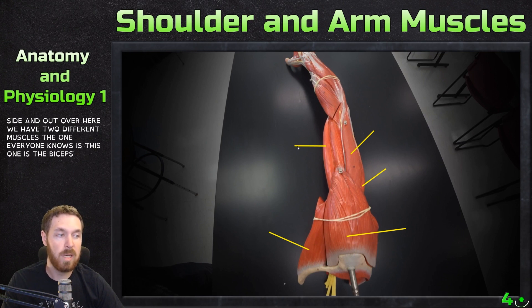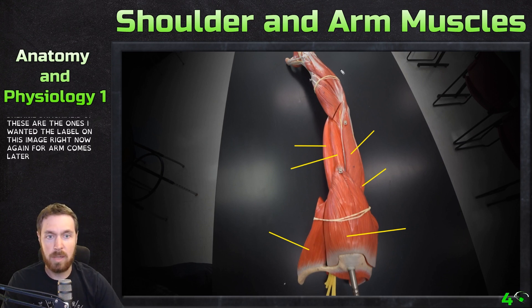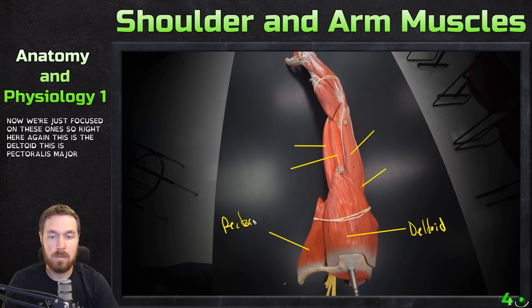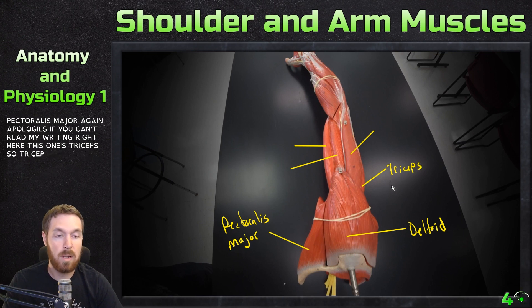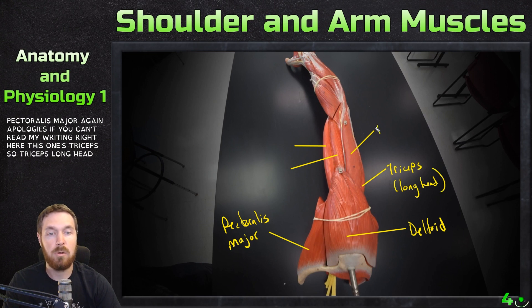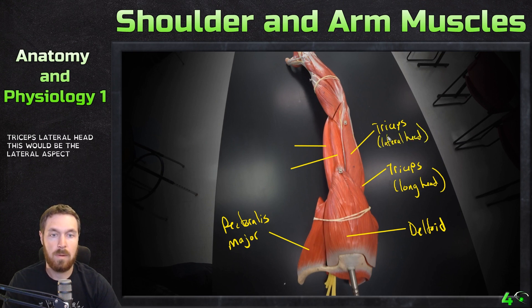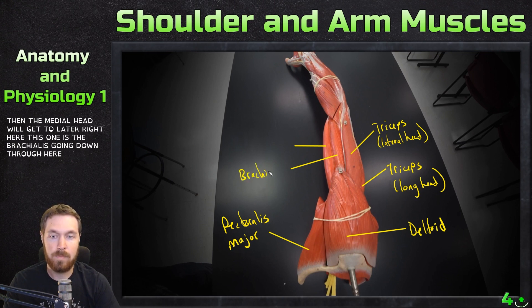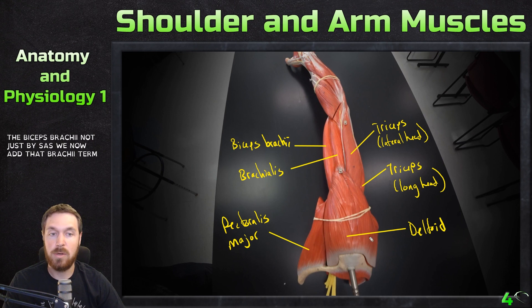Over here we have two different muscles. The one everyone knows is the biceps brachii, and then this one in here is called the brachialis. So right here again: deltoid, pectoralis major, triceps long head, triceps lateral head — the medial head we'll get to later — then the brachialis going down through here, and then biceps brachii. Not just 'biceps' — we now add that 'brachii' term to it.